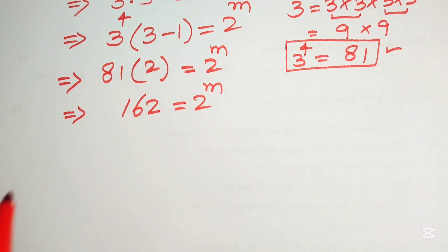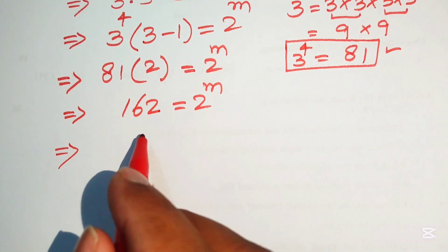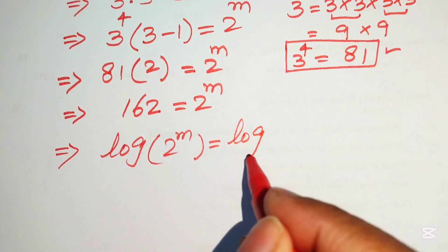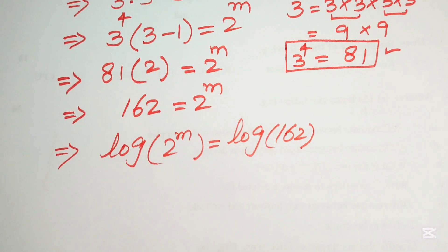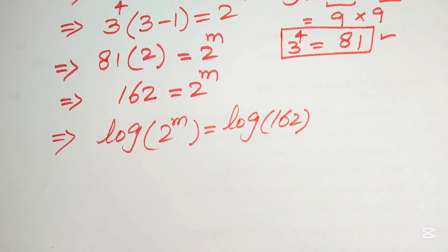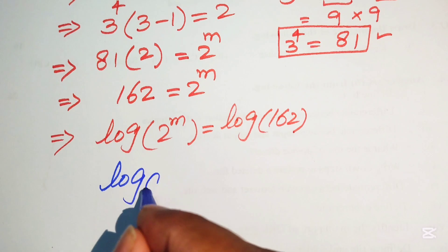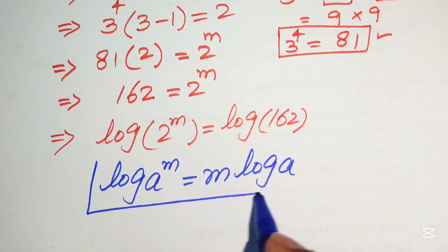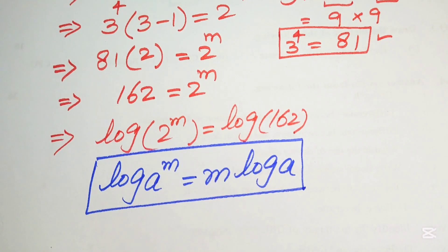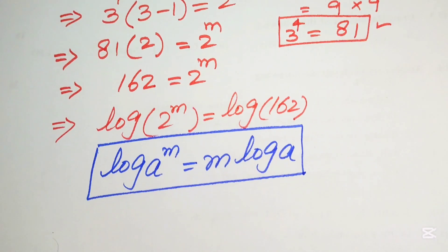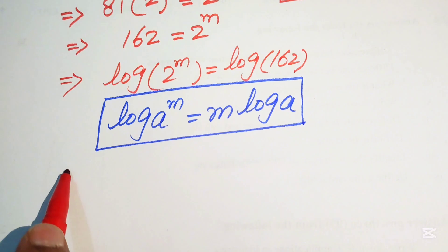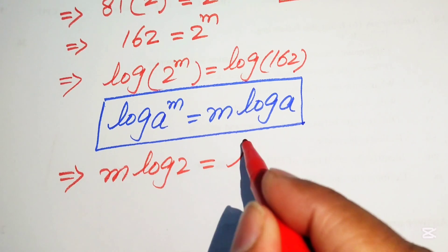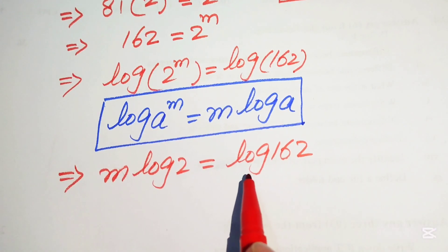Taking log of both sides, we write: log(2^m) equals log(162). We then apply the logarithm power property, which states that log(a^m) equals m times log(a). Applying this to the left-hand side, we move the exponent m to the front, giving us m times log(2) equals log(162).